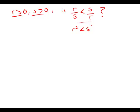So cross-multiplying, we get r squared is less than s squared. And because we're both positive, we'll just take the square root and take the positive root. This reduces to the question: is s greater than r? So this very complicated question can be replaced with a much simpler question — is s greater than r?